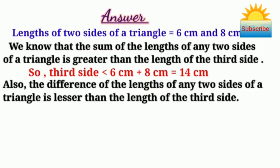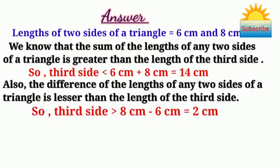Also, the difference of the lengths of any two sides of a triangle is lesser than the length of the third side, so the third side has to be more than 8 cm minus 6 cm, which equals 2 cm.